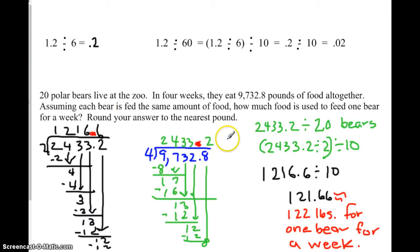So here's my problem. 9,732 and eight tenths of a pound of food for four weeks. Here's my answer to that. Then I need to know if each bear is fed the same amount of food, how much is used to feed one bear for a week. Well, then I take this number, divide it by 20 bears, take off my 10. I'm left with this number and now I need to divide it by two, which I did over here. That's my answer. Divided by 10. I have to round it. So it's approximately 122 pounds. I hope you got that. Read it over again.